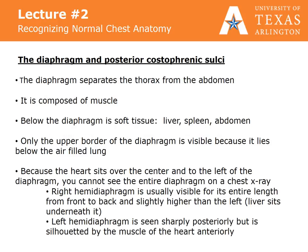The diaphragm is a muscle that separates the thorax from the abdomen. Below the diaphragm are soft tissue contents of the abdomen such as the liver and the spleen. Only the upper border of the diaphragm is visible because it lies below the air-filled lung. Because the heart sits over the center and to the left of the diaphragm, you cannot see the entire diaphragm on a chest x-ray. We refer to the right hemidiaphragm and the left hemidiaphragm. The right hemidiaphragm is usually visible for its entire length and is slightly higher than the left. The liver sits under it. The left hemidiaphragm is seen sharply posteriorly but is silhouetted by the muscle of the heart anteriorly. Any air in the stomach or splenic flexure of the colon appears immediately below the left hemidiaphragm.